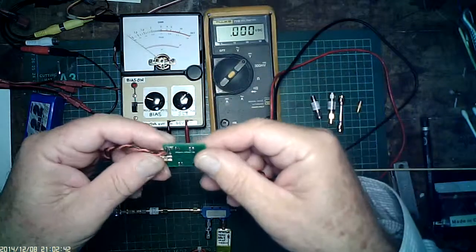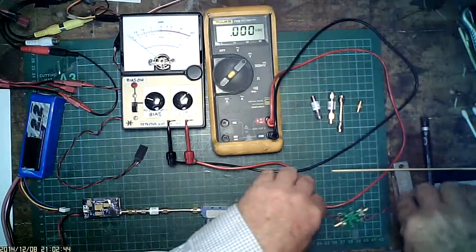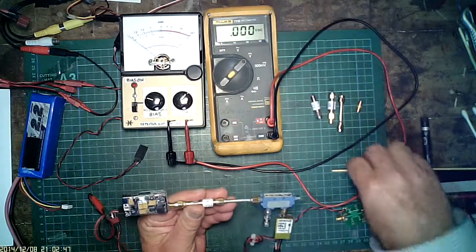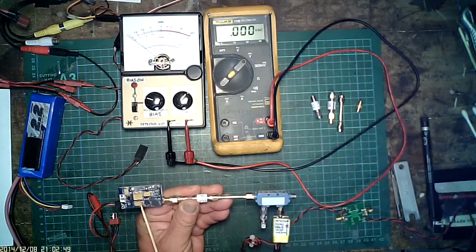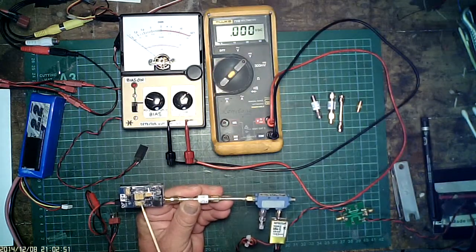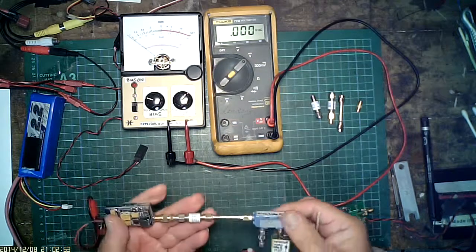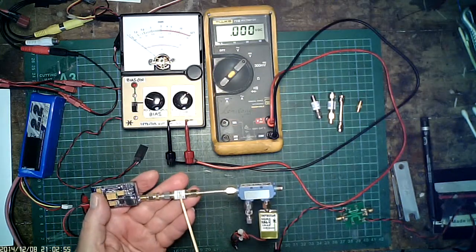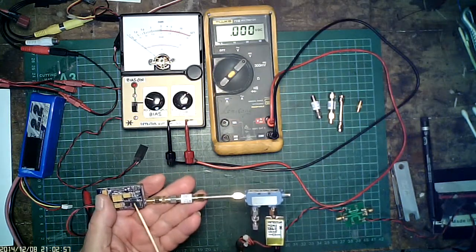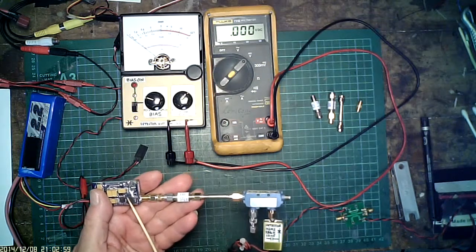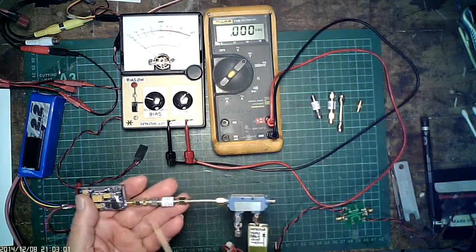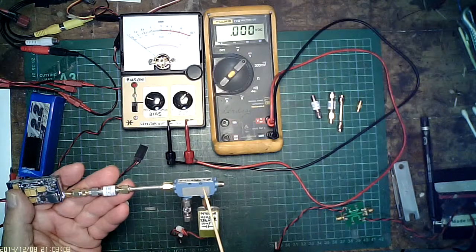The test setup, just to show you how things work. This is a 200 milliwatt 5.8 gigahertz VTX. There's a 6 dB attenuator protecting the output of the VTX from high VSWR.